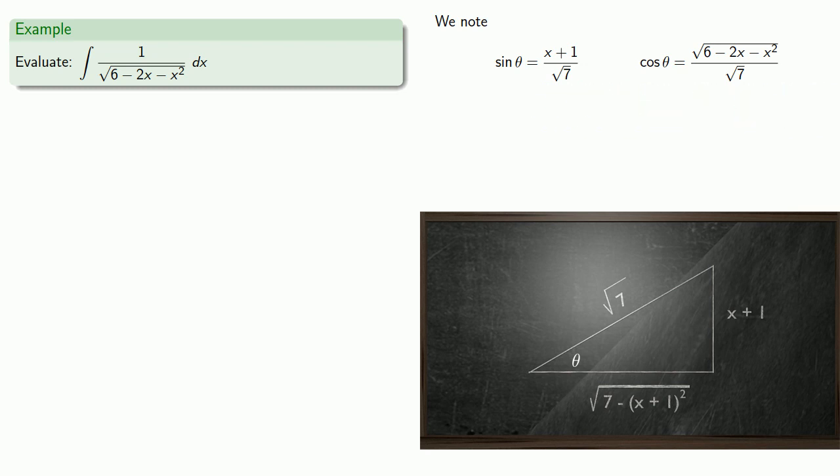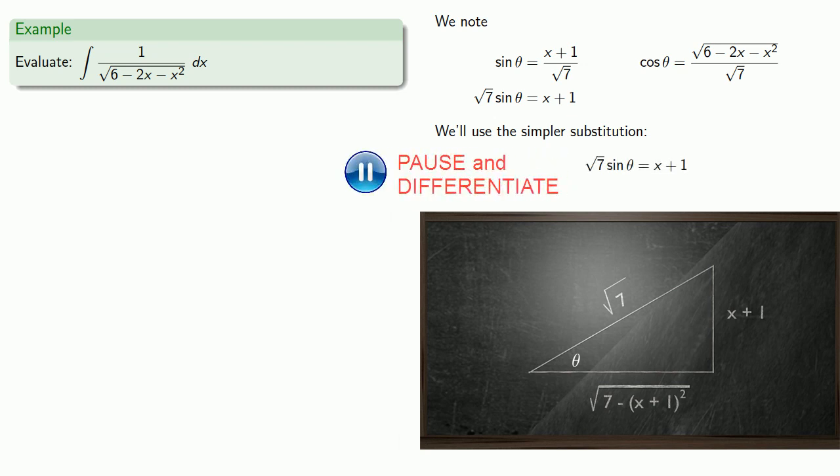We want to be able to solve for an expression in x so we can find dx, so let's work that sine expression. We'll use our simpler substitution: square root 7 sine theta equals x plus 1. Differentiating, square root 7 cosine theta d theta equals dx.